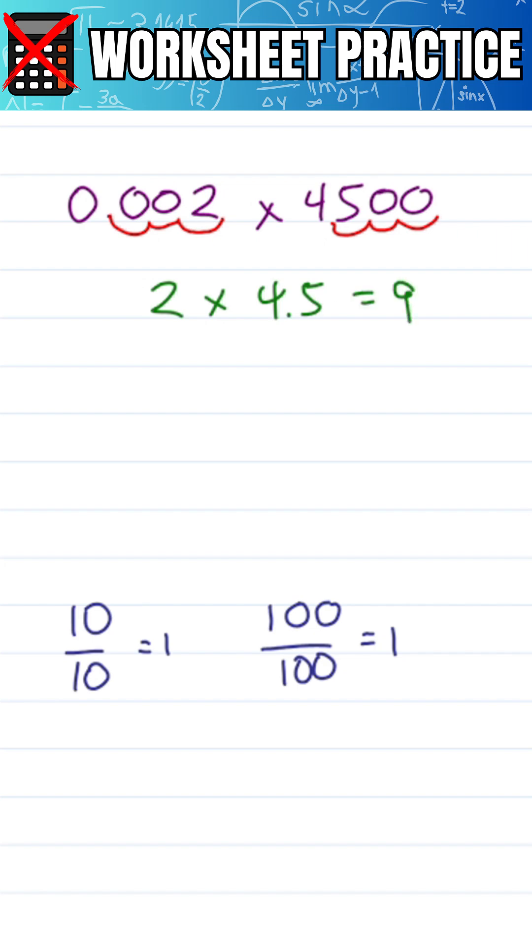Or I can do 2 times 4 is 8, 2 times 0.5 is 1, 8 and 1, again, is 9.